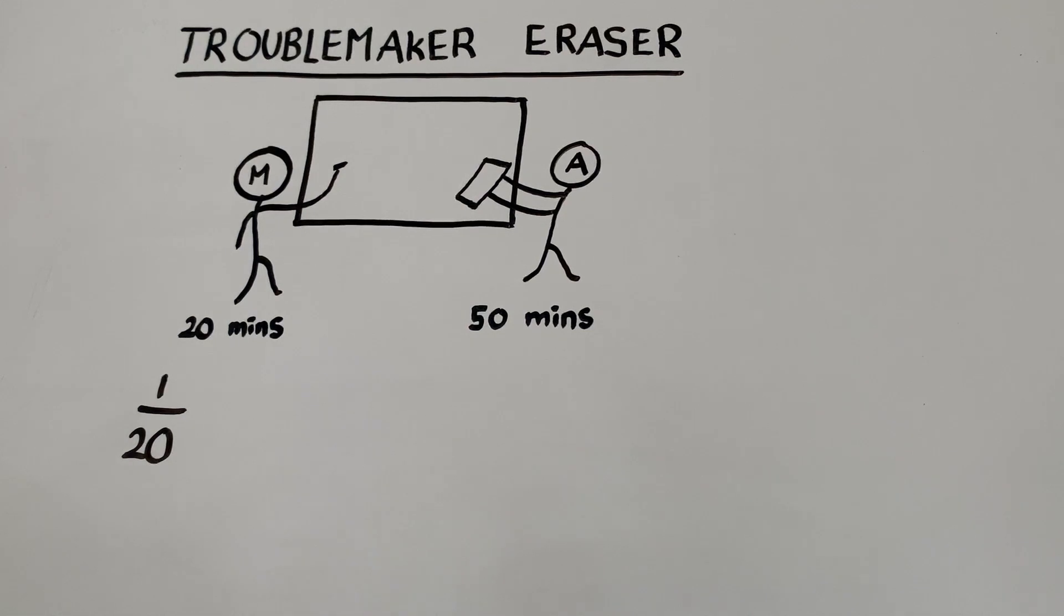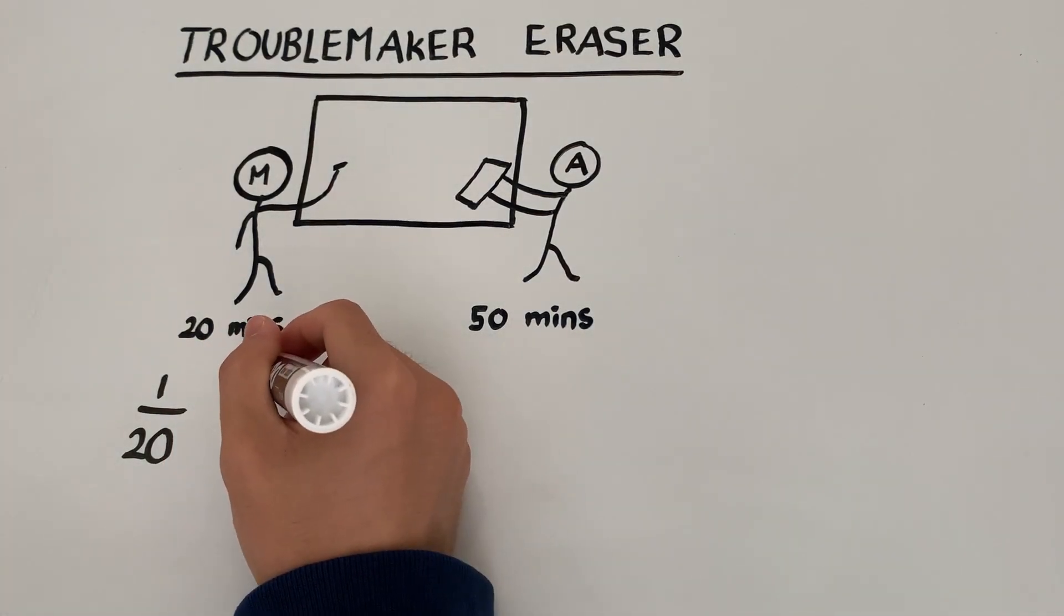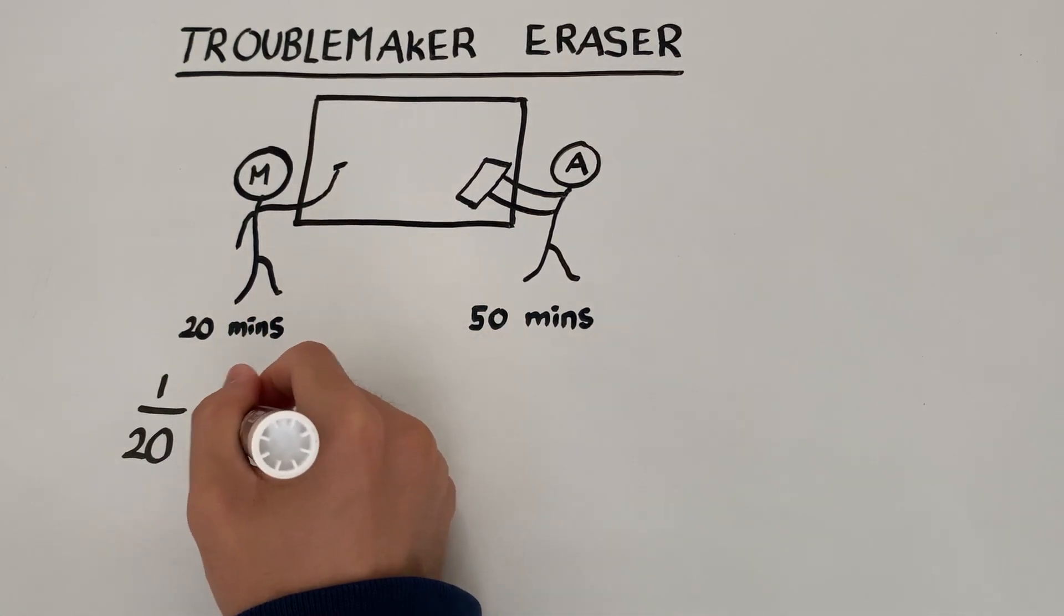Similarly, if Adam takes 50 minutes to erase an entire board, then that means each minute Adam is erasing 1/50th of the board.